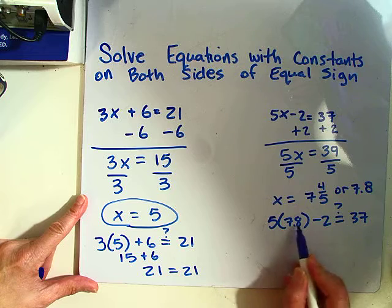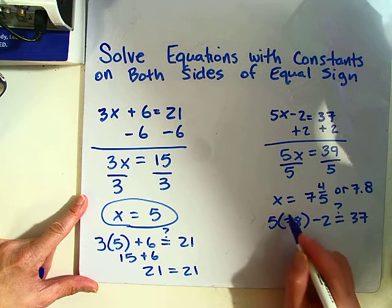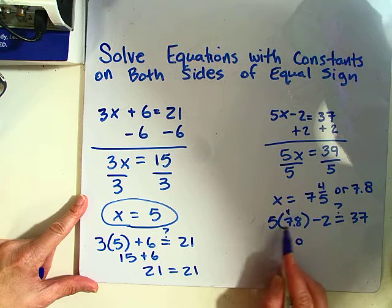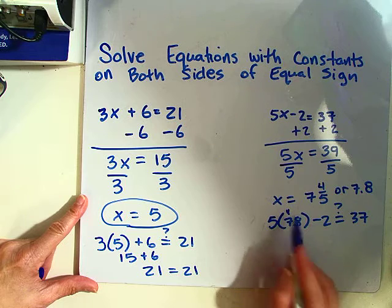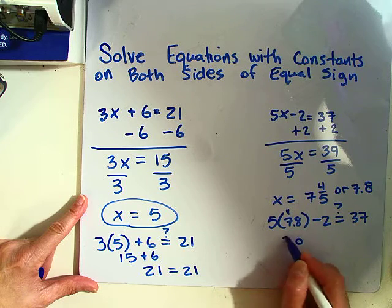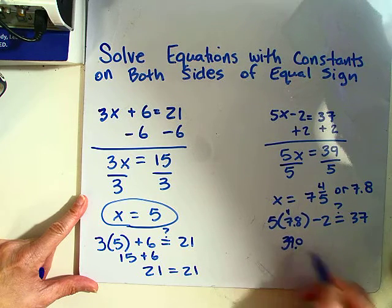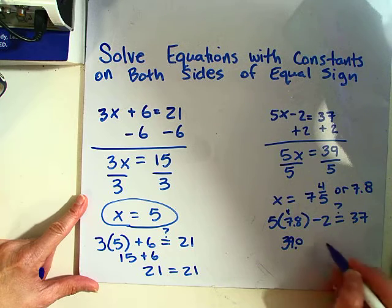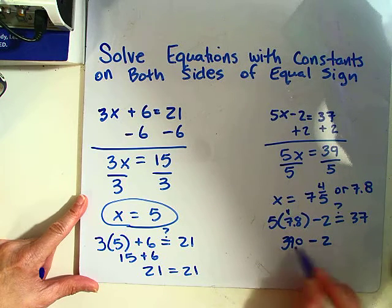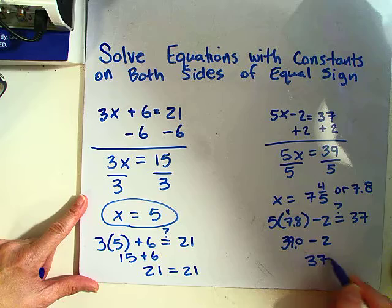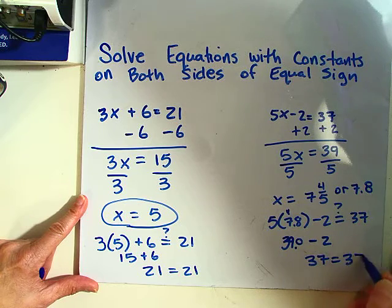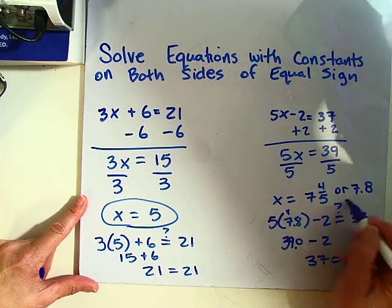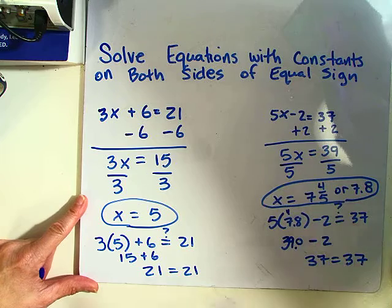Well, 5 times 8 is 40, carry the 4. 5 times 7 is 35, plus 4 is 39. So 39.0 minus 2, that's going to give us 37. And that does equal 37, so this is the solution.